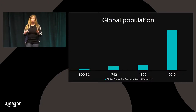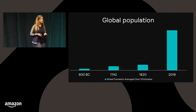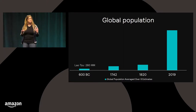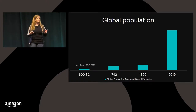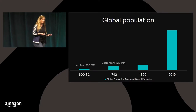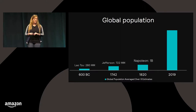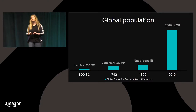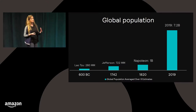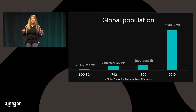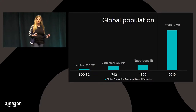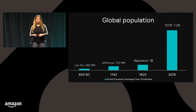Looking at global population since human history: in 600 BC, when Lao Tzu was writing his first work, we had 280 million humans on the planet. At the time of Thomas Jefferson, we had 722 million. When Napoleon was making headway in Europe, we reached our first billion. Now in 2019, we are over 7 billion humans. For the builders and dreamers in the room: how do we optimize public policy and leverage technology — both data engineering and artificial intelligence — to design intelligent public policy using machine learning?